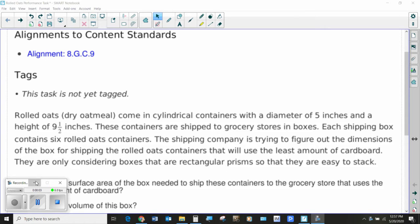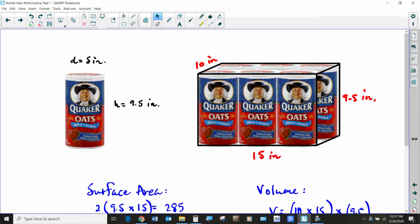All right, let's see how you did on our performance task for rolled oats. Remember, your job is to try and design a box, a shipping container that will ship six boxes or containers of rolled oats using the least amount of cardboard, and it had to be a rectangular prism. Knowing that each one of these containers of Quaker oats or rolled oats is five inches in diameter and nine and a half inches tall, there are certain different configurations that we can make.